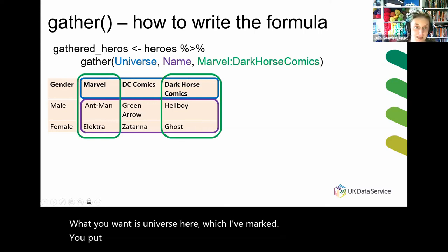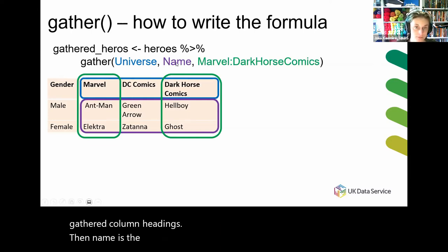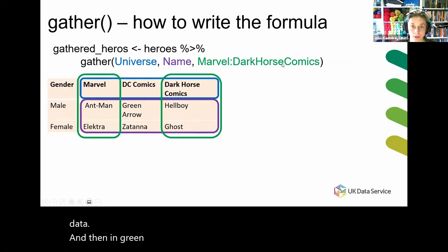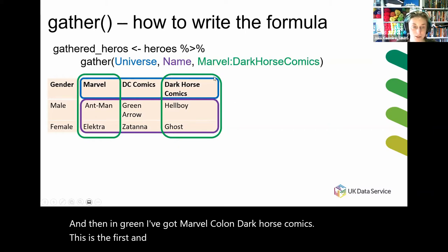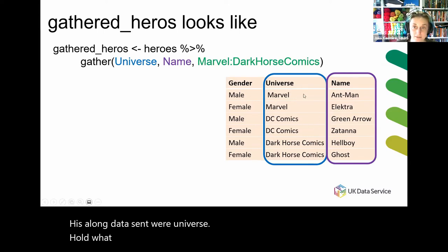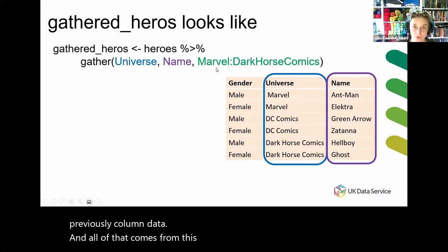You put 'universe' — this is the name of the column that will hold the gathered column headings. Then 'name' is the name of the column that will hold the gathered column data. And in green I've got 'Marvel:Dark Horse Comics' — this is the first and final columns in a range of columns that you will gather. So the output is a long data set where 'universe' holds what were previously column headings, and 'name' holds what was previously column data, all coming from this range: Marvel colon Dark Horse Comics.